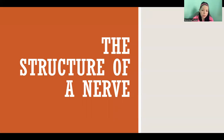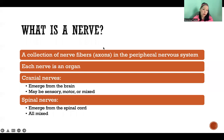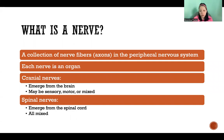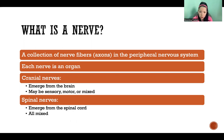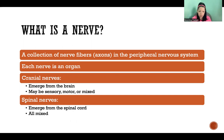Hello, in this video I'm going to talk about the structure of a nerve. So to start with, what is a nerve? A nerve is a collection of nerve fibers or axons that is located in the peripheral nervous system. To clarify, a nerve cell is a neuron — that's a single cell — and a nerve is a collection of axons that are projected from many different cells.